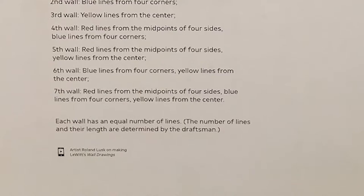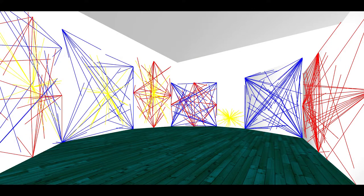Each wall has an equal number of lines. The number of lines and their length are determined by the draftsman — the person creating the artwork itself. So there is open interpretation. The artist is giving acknowledgment to the person creating this piece that they're going to have to make some changes on their own. He's fully giving them the power to make those decisions, but at the end of the day, the artwork still falls back to LeWitt and his initial designs.